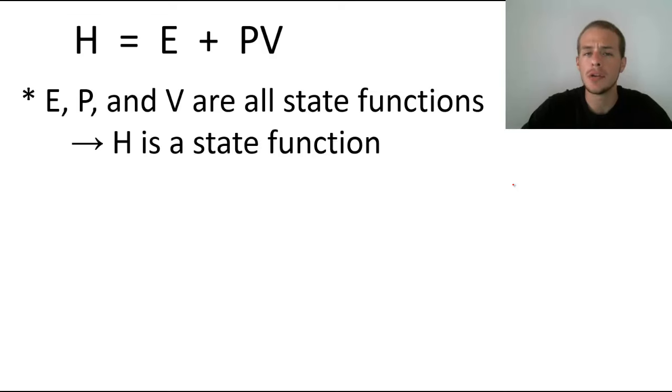When calculating the change of a state function, it's simply the final value minus the initial value. The symbol that tells us final minus initial is the Greek capital delta. So if we want the change in enthalpy, delta H equals delta E, the internal energy change, plus P delta V, the pressure times the change in volume. Notice that P term doesn't have a delta symbol on it because we're assuming a constant pressure situation.